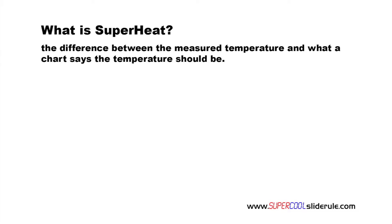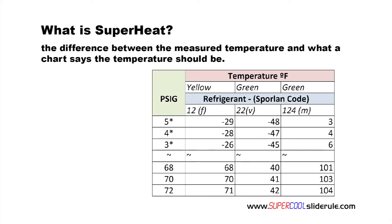Here is an example. If we reference a temperature pressure chart for R22, we will note that at 70 PSI our temperature should be 41 degrees.